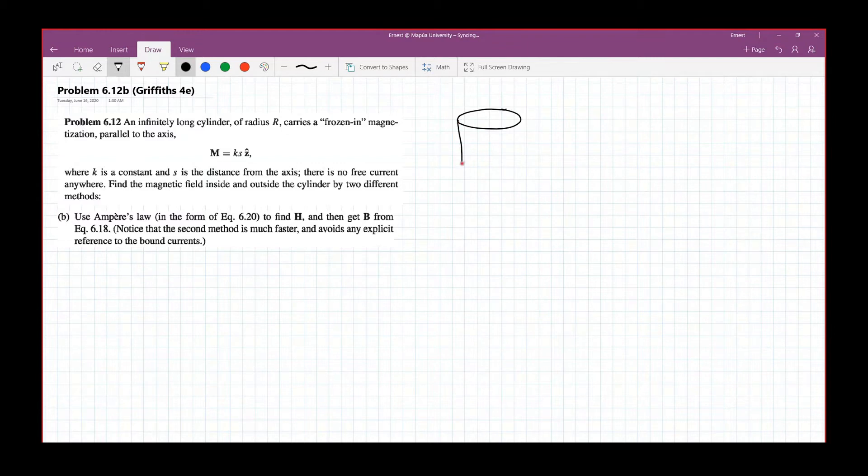This is your cylinder. Here we're given the auxiliary field H and we need to use Ampere's law to find H. And then from there, we can get the magnetic field from equation 6.80. Notice this is much faster and it avoids any explicit reference to the bound currents.